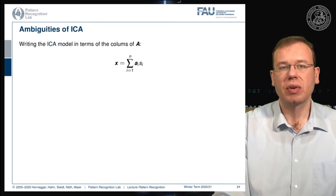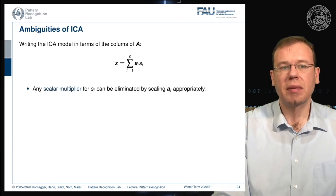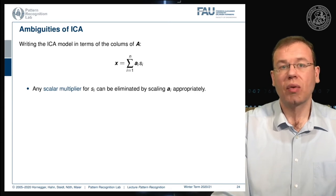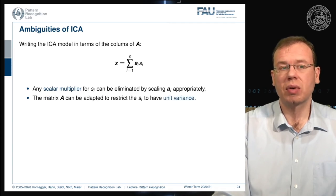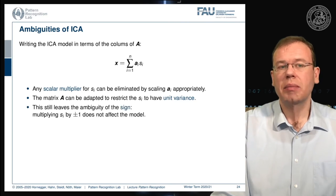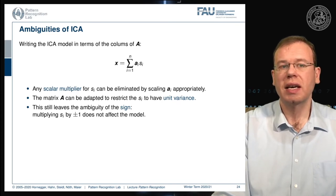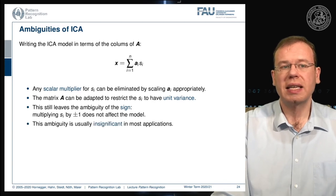The sj are determined only up to a multiplicative constant, and they are not ordered. The observation we get is a sum over the column vectors of A multiplied by the strength of each respective signal. Any scalar multiplier for si can be eliminated by scaling the corresponding column of A appropriately. We can restrict A to unit variance, but this still leaves a sign ambiguity — multiplying by plus or minus one doesn't affect the model.